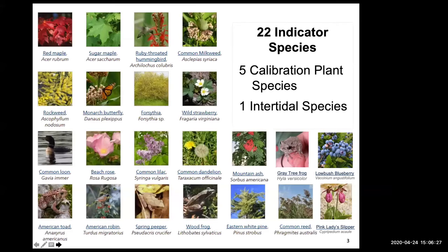We have 22 indicator species and one intertidal species — a combination of plants and animals, mostly birds and amphibians.